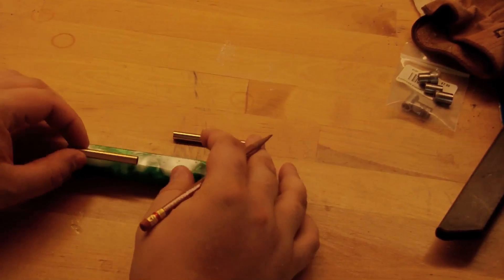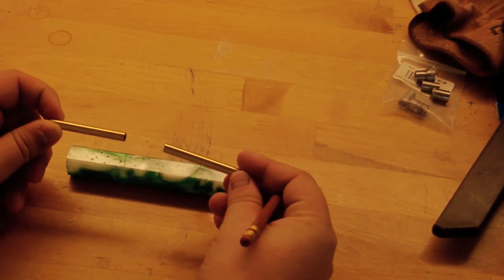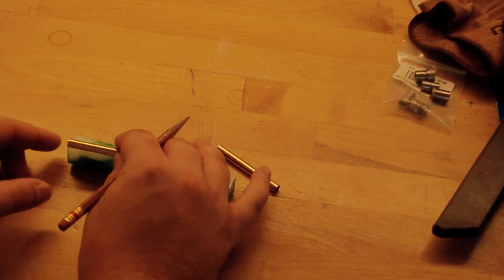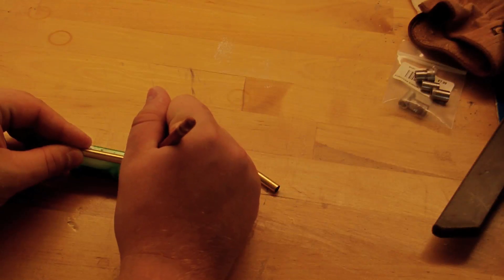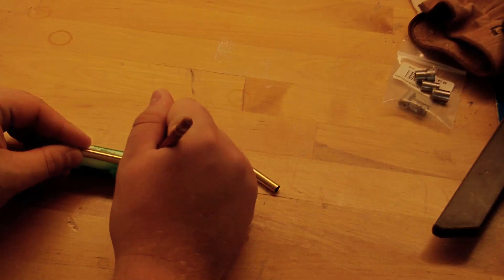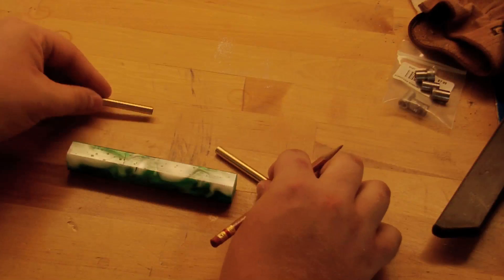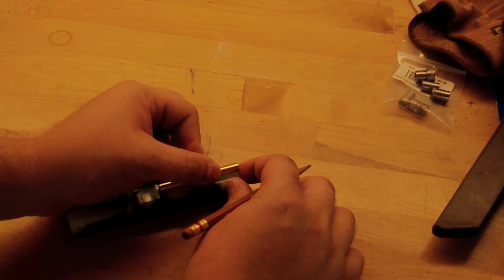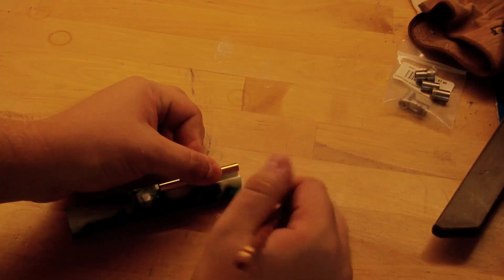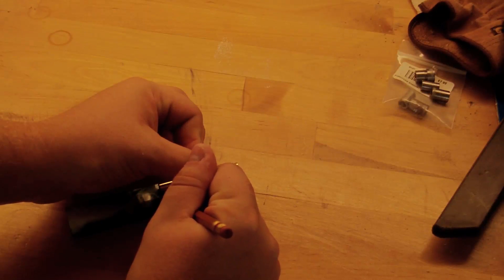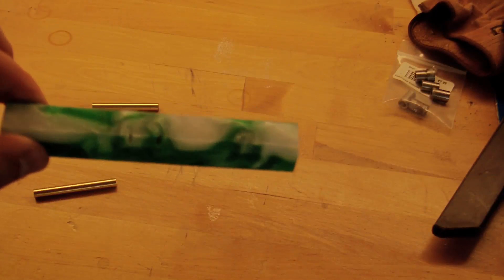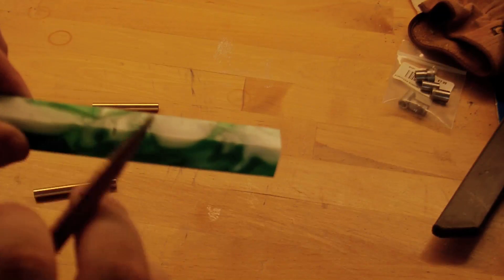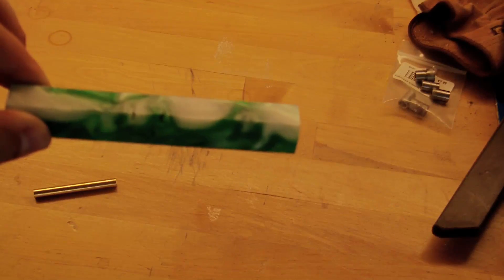So first thing we're going to do here, these are the two segments of the pen. What we're going to do is actually line these up with the edges and mark on here where we're going to be cutting it on the table saw. You want these to be nice and flush because otherwise you have to go back through and trim it up after you glue them in. Now that we have the two marks here, we're going to actually go ahead and cut this on the table saw.